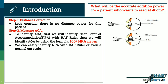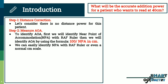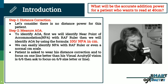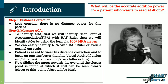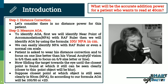We can easily identify the near point of accommodation with a RAF ruler or even a normal cm scale. The patient is asked to wear their distance correction and to focus on one line smaller than their visual acuity. Suppose if the visual acuity is 6/6, then ask to focus on the 6/9 size letter or line. Now slide the target towards the patient's eye until the closest point at which it can still be seen clearly is found. Closer than this point, the object will be blurred. Suppose the closest point at which the object is still seen clearly is 50 cm, which is our near point of accommodation. So according to our formula, amplitude of accommodation will be 100 divided by 50, or +2 diopters.